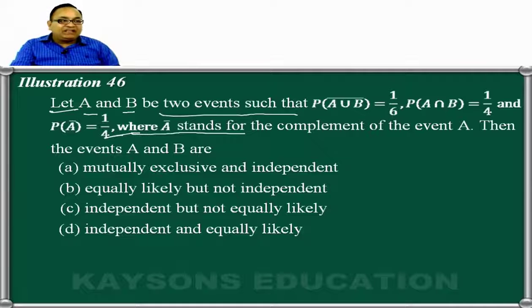Where A dash or bar stands for the complement of the event A. Therefore A bar is not the same. Then the events A and B are, this is given for us.